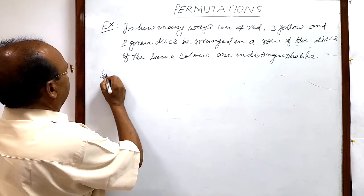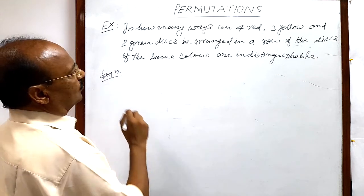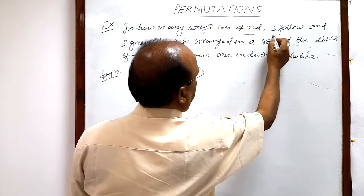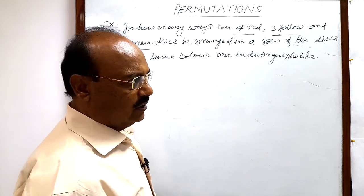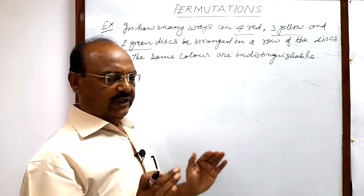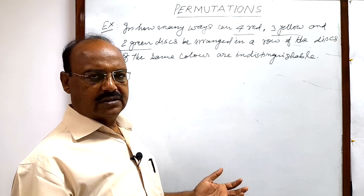So let us see the solution here. We have 4 red balls, 3 yellow balls, and 2 green balls, all exactly similar within each color. The disks of the same color are exactly similar.